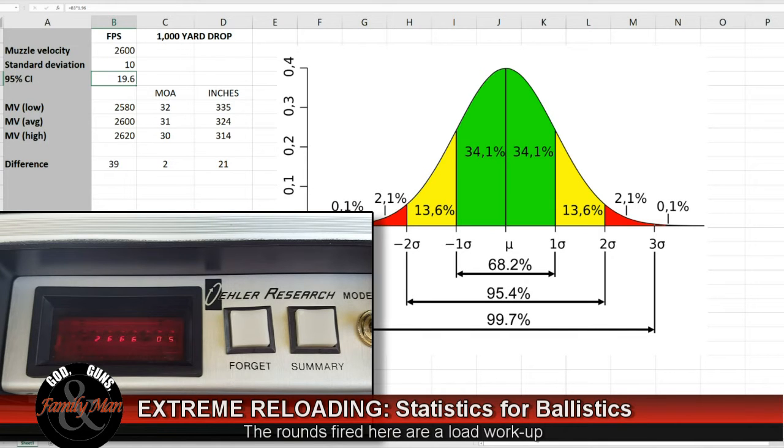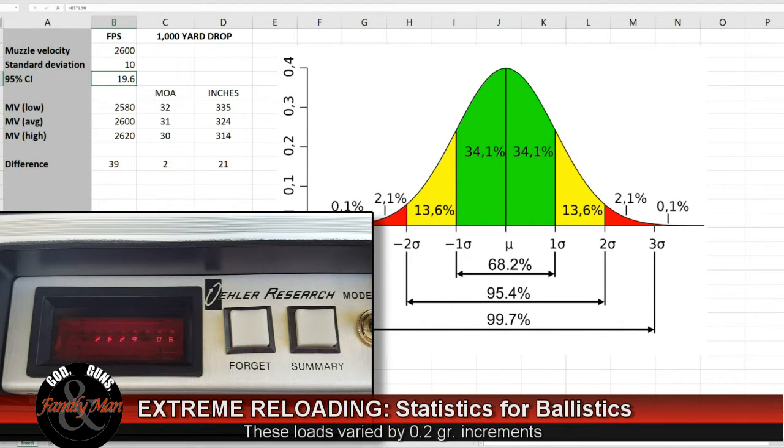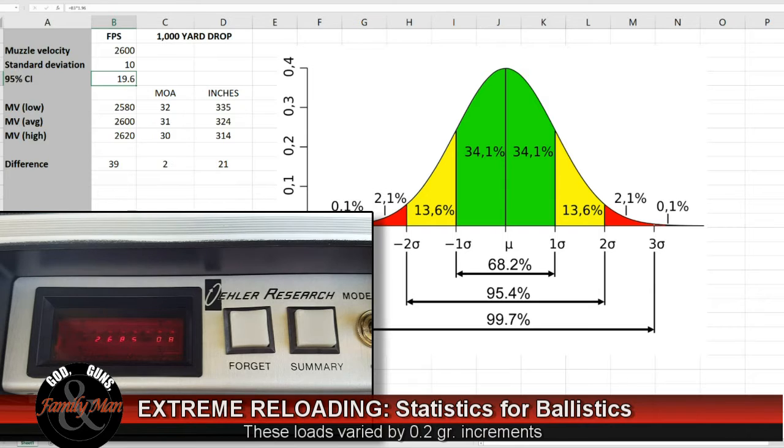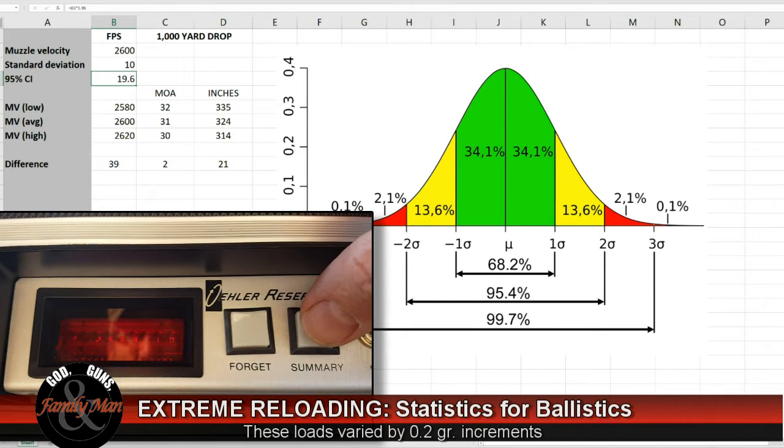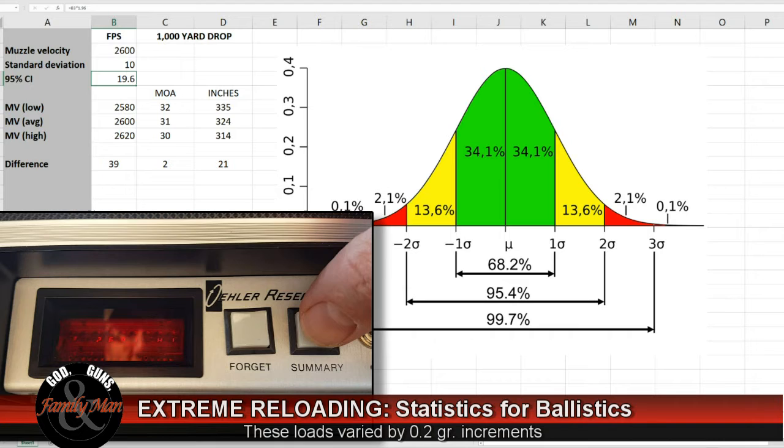Another benefit of having those chronographs is that nearly all chronographs will also give you a summary. This summary provides descriptive statistics, and some of those important descriptive statistics describe things like the mean and the standard deviation. Those two can be very useful for us to really understand what our ammunition, what our rounds are doing today as well as what they will do in the future.